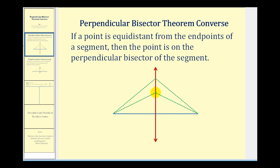For example, if we consider this point here, the converse tells us that if it's equidistant from the endpoints — meaning this segment is congruent to this segment — then this black point must be on the perpendicular bisector. The same would be true for any point equidistant from the endpoints. If this segment were congruent to this segment, this point would have to be on the perpendicular bisector.